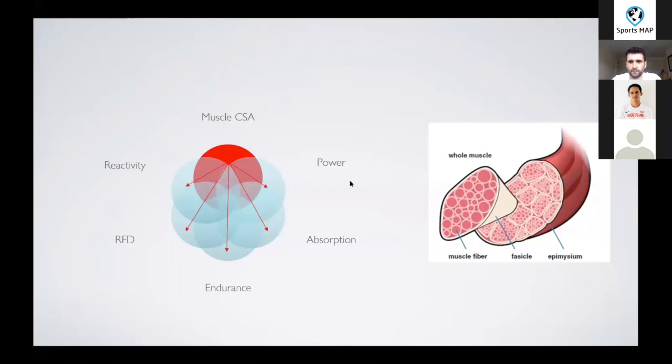There needs to be a baseline level of cross-sectional area to have force potential so any of these more higher order physical qualities can emerge. If we see someone and their isometric force is down by maybe 20-30%, then our goal will be targeting cross-sectional area and muscle strength at this stage.